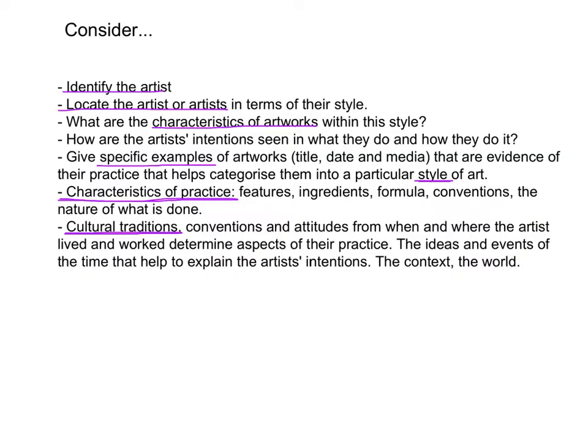When you're writing about an artist and their art making practice, you firstly need to identify the artist — who they are by name. You can then locate the artist, or artists if you're looking at more than one, in terms of their style. What this means is you're attempting to place them within a particular art movement, and the way you do that is by looking at the different characteristics of the artwork and how they connect with a particular art movement.